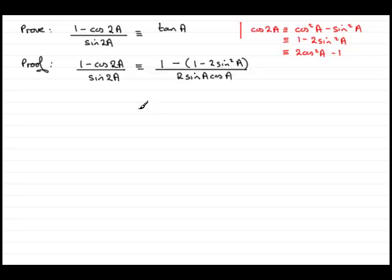Now we just need to simplify this by expanding out the bracket on the top. We've got 1 minus, and then we're multiplying the bracket by negative 1. So we end up with minus 1 and then plus 2 sine squared a. And this is divided then by 2 sine a cos a.